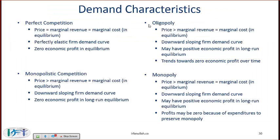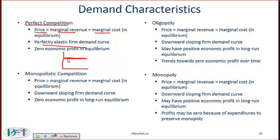You need to understand the demand characteristics of the four structures. With perfect competition, price equals marginal revenue equals marginal cost — this is what happens in equilibrium. The demand curve for an individual supplier in a perfectly competitive market is elastic, so we have a horizontal demand curve. When you talk about the market as a whole, the demand curve will obviously be downward sloping.